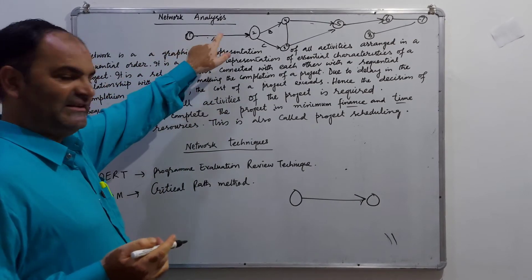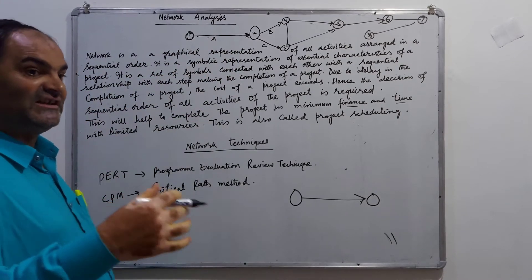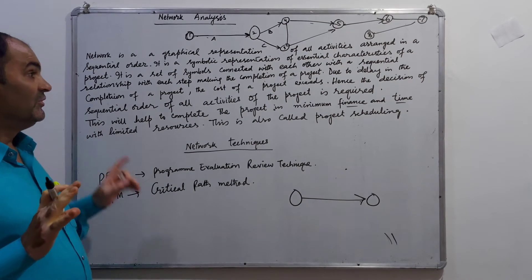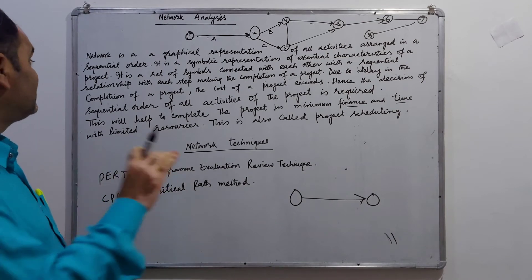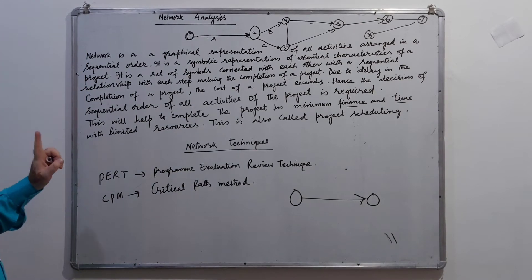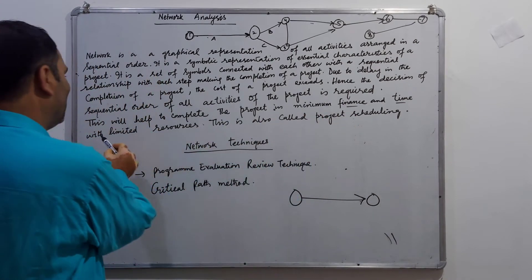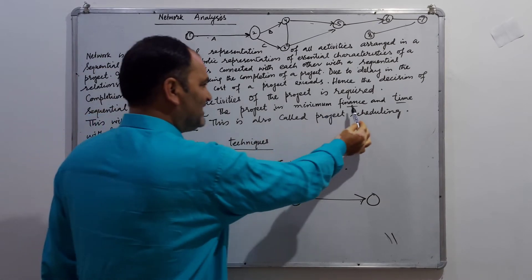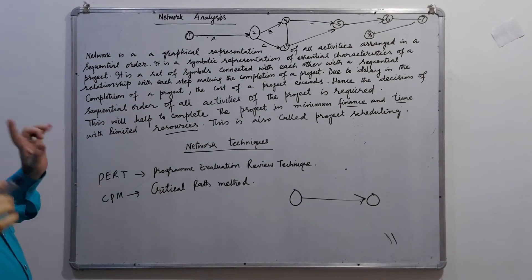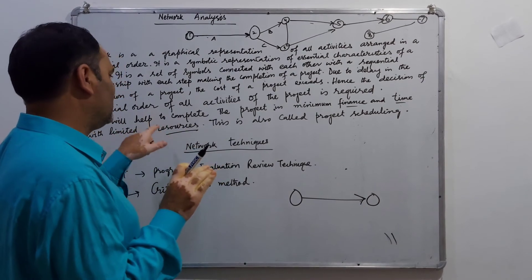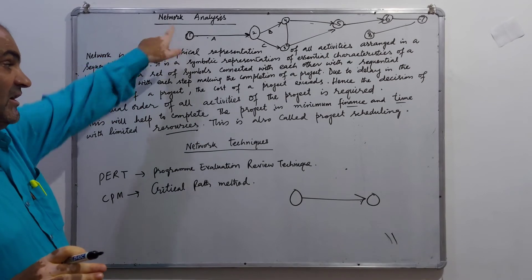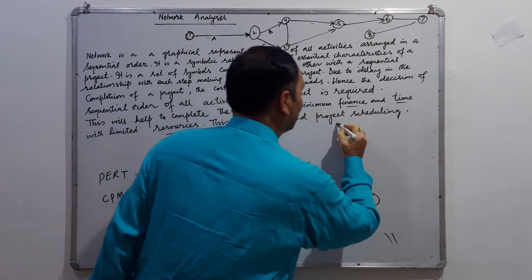This network analysis helps us to reduce the cost of the project. We are supposed to decide the sequential order of all activities to complete the project. This will help to complete the project in minimum time and with limited finance and resources. This is also called project scheduling.